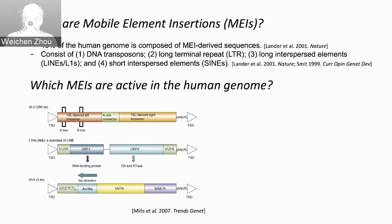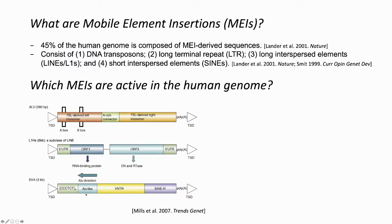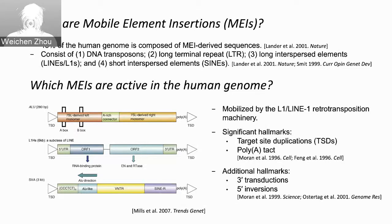There are three main categories of mobile element insertions still active in the human genome: ALUs, L1HS (a human-specific subclass of L1), and SVA. They can be mobilized by L1 retrotransposition machinery. There are several significant hallmarks of retrotransposons such as TSD motifs, poly-A tails, and additional hallmarks like 3' transductions and 5' end inversion sequences.